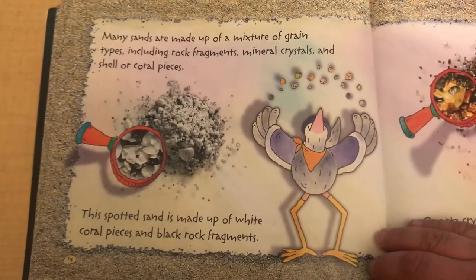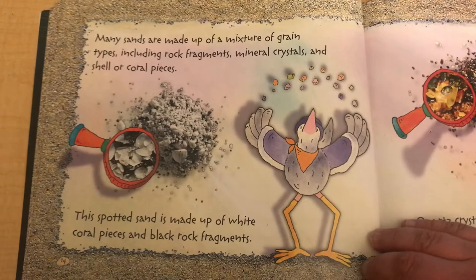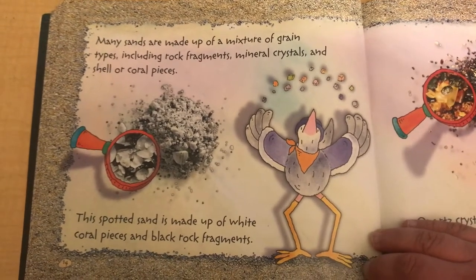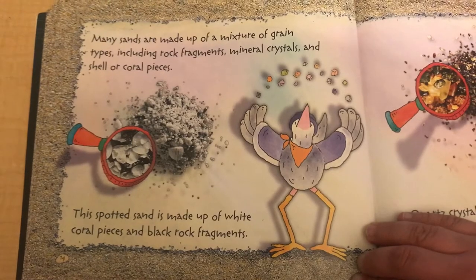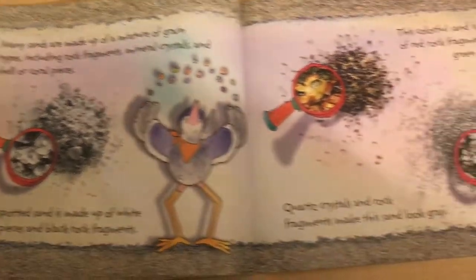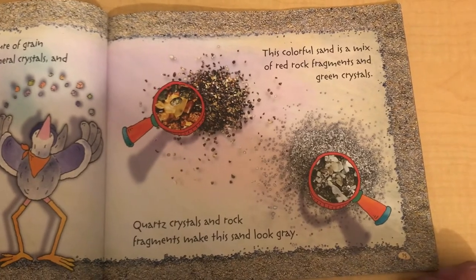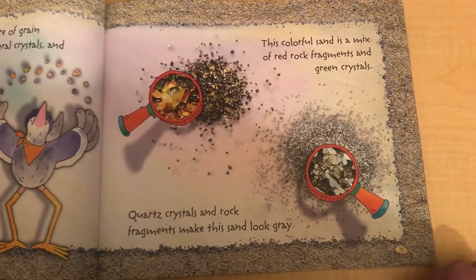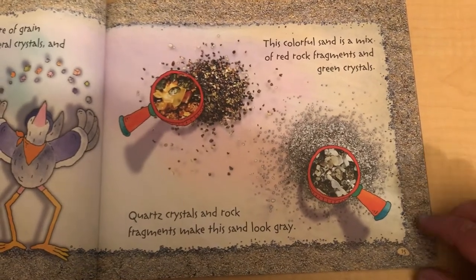Many sands are made up of a mixture of grain types, including rock fragments, mineral crystals, and shell or coral pieces. This spotted sand is made up of white coral pieces and black rock fragments. This colorful sand is a mix of red rock fragments and green crystals. Quartz crystals and rock fragments make this sand look gray.